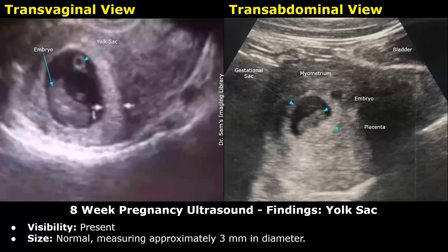Then you can write the findings of the yolk sac. The yolk sac is present, so you can write visibility as present. Then you can write the size of the yolk sac — here it is normal, measuring approximately three millimeters in diameter.